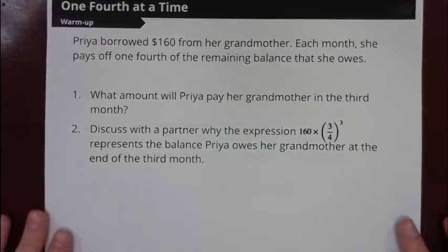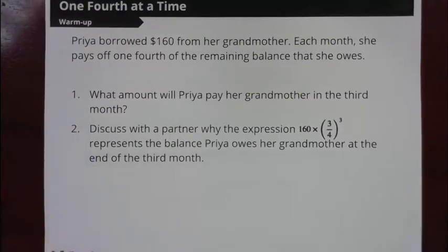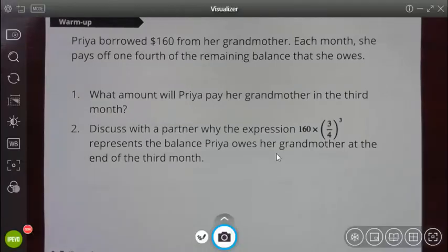In this situation, we have this girl Priya who borrowed $160 from her grandmother and each month she pays off one-fourth of the remaining balance that she owes. We have two questions to answer here. Read through both questions and think about how you'd answer each one for about five minutes and then answer each one in turn as we go through it.